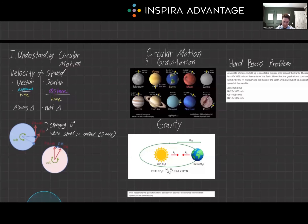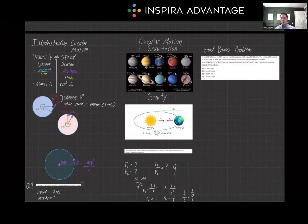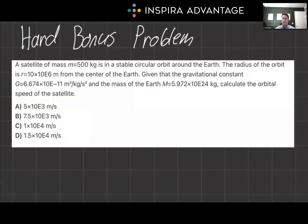You are now a gravity and circular motion expert and should be able to get these questions on the chem-phys section. If you want to try a really hard question to make sure you've absolutely got it, stick around — we'll do that right now. Take a few moments to try this problem: a satellite of mass M equals 500 kilograms is in a stable circular orbit around the Earth. The radius of the orbit is R equals 10 times 10 to the 6 meters from the center of Earth. Given that G equals 6.674 times 10 to the negative 11 m³/(kg·s²) and the mass of Earth is 5.972 times 10 to the 24 kilograms, calculate the orbital speed of the satellite.